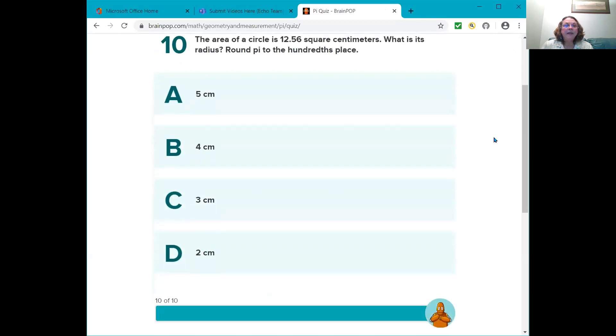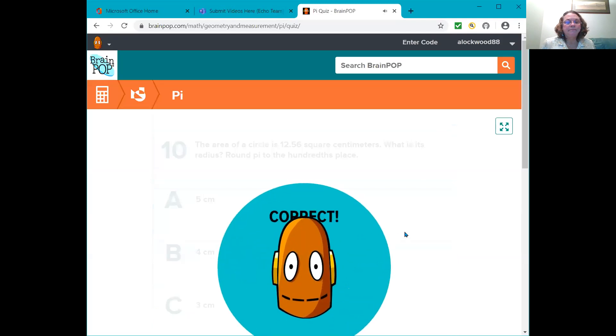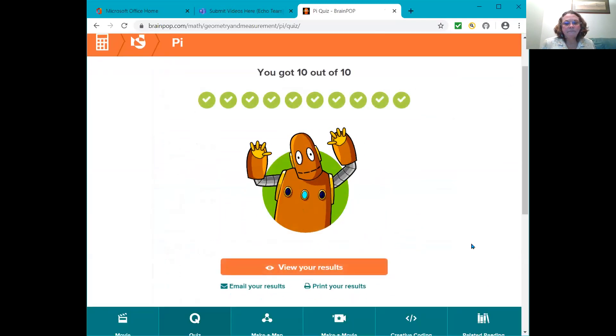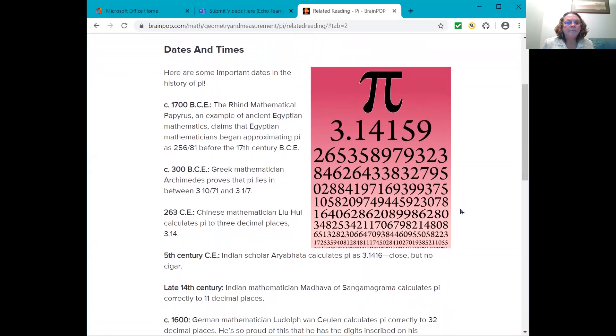Last question. The area of a circle is 12.56 square centimeters. What is its radius? Round Pi to the hundredths place. Is it 5, 4, 3, or 2 centimeters?